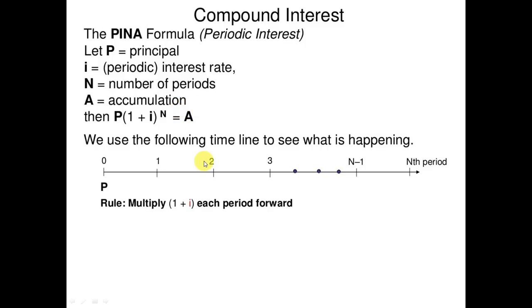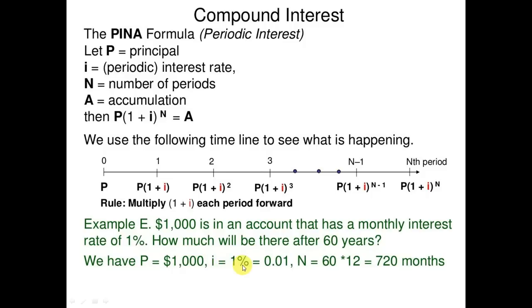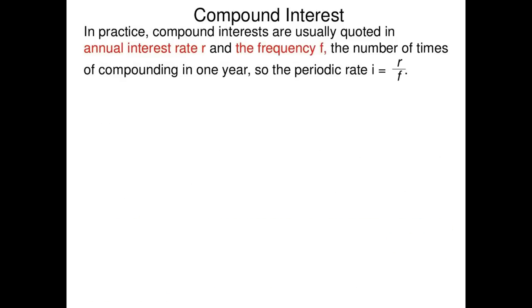Example: 100 dollars is in an account with a monthly interest rate of 1 percent. How much will be there after 60 years? We have P = 1000, i = 0.01, and n = 720 months. By the PINA formula, the amount will be 1000 into (1 + 0.01) raised to power 720, that is 1,292,376.71 after 60 years.